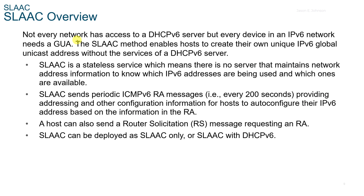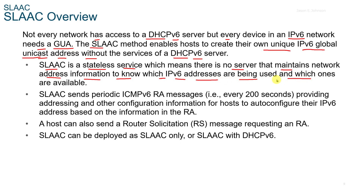8.2 SLAAC. Not every network has access to a DHCPv6 server, but every device in a V6 network needs a GUA. The SLAAC method enables hosts to create their own unique IPv6 Global Unicast Address without the services of a DHCPv6 server. SLAAC is a stateless service, meaning there is no server that maintains network address information to know which IPv6 addresses are being used. SLAAC sends periodic ICMPv6 RA messages about every 200 seconds, and a host can also send a Router Solicitation, or RS message, requesting an RA.